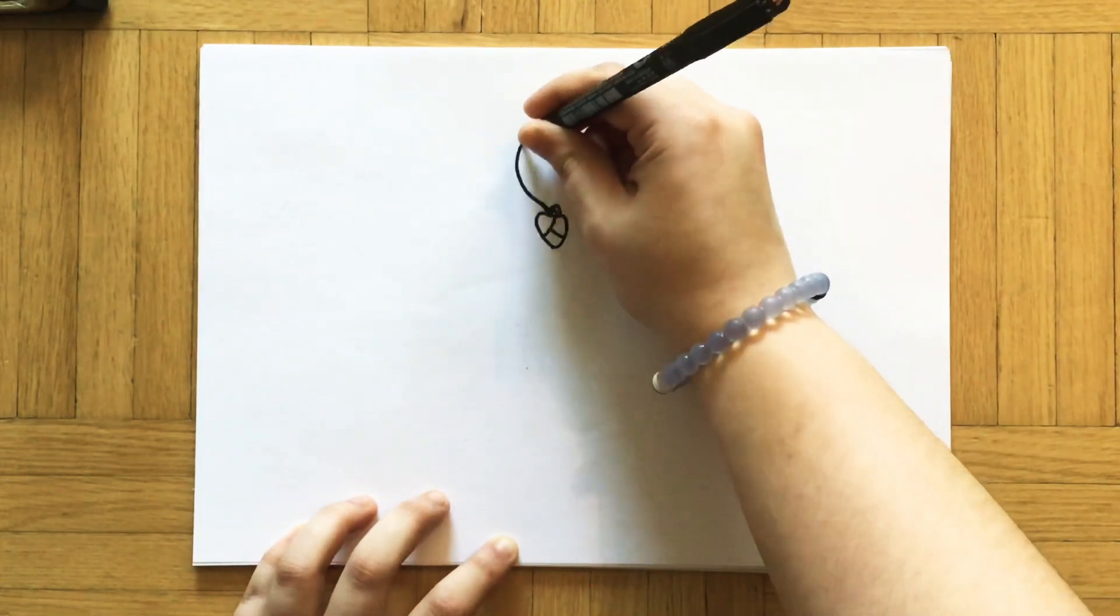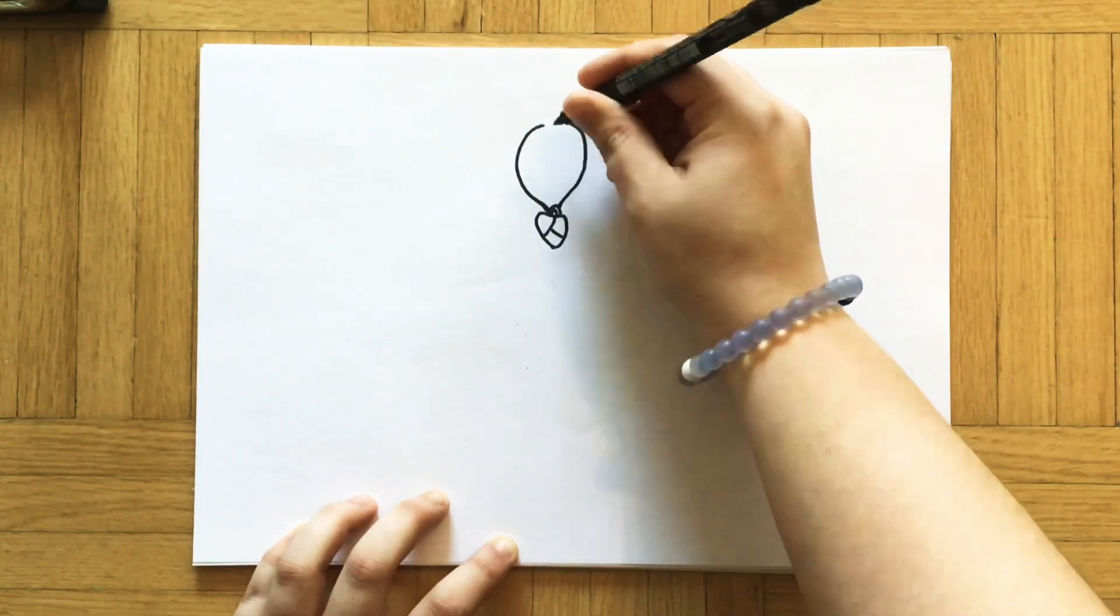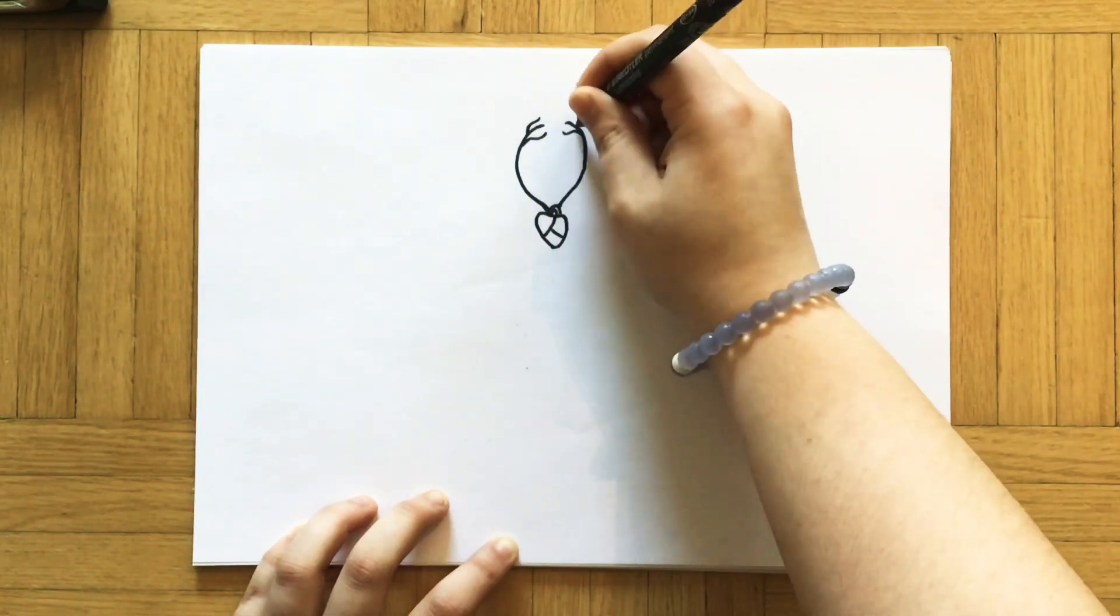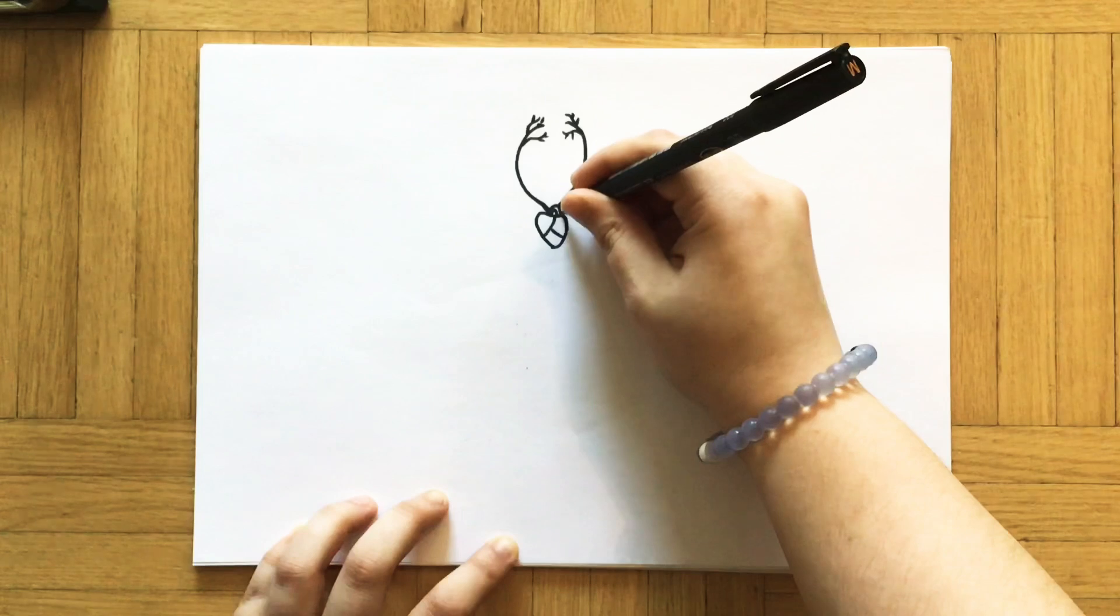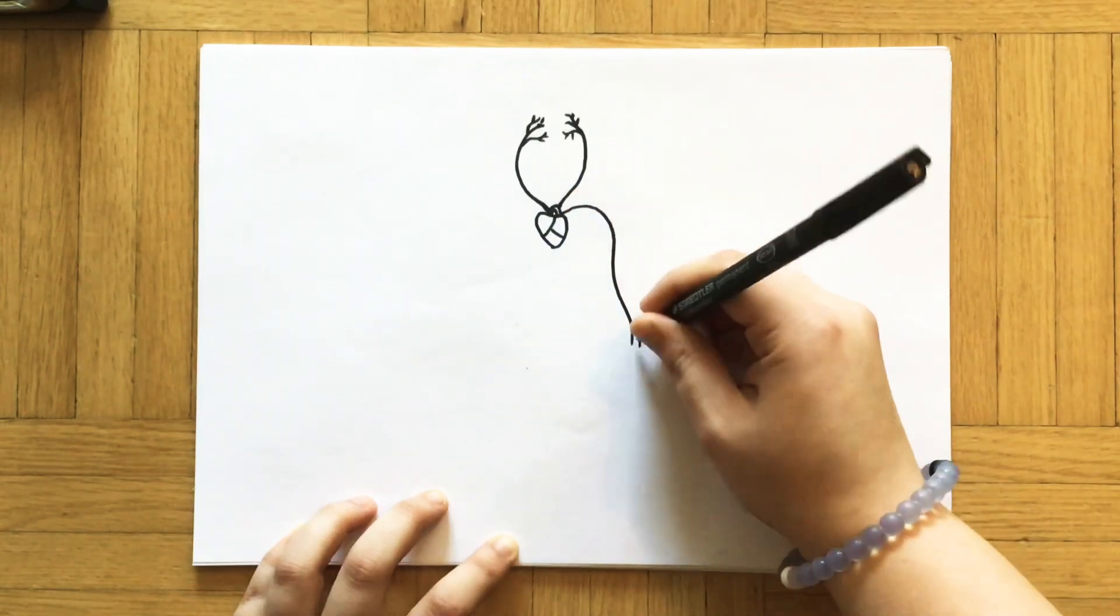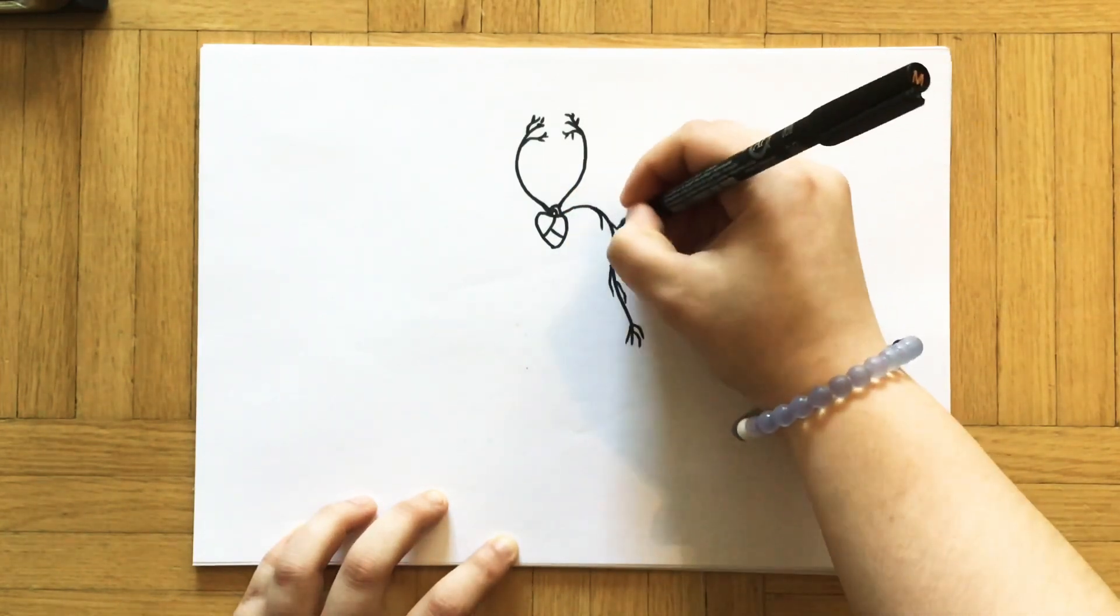The heart is a muscle that pumps blood everywhere into your body. The pathways that blood takes are called blood vessels.